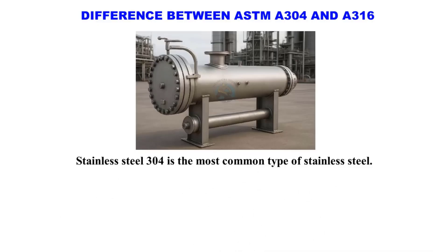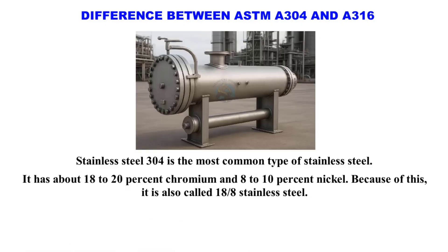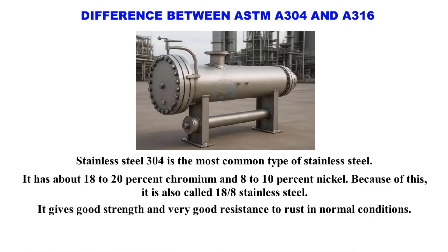Stainless steel 304 is the most common type of stainless steel. It has about 18 to 20 percent chromium and 8 to 10 percent nickel. Because of this it is also called 18-8 stainless steel. It gives good strength and very good resistance to rust in normal conditions.